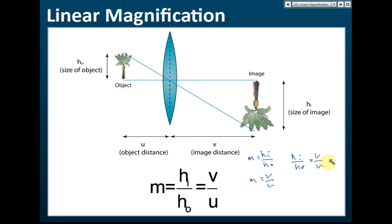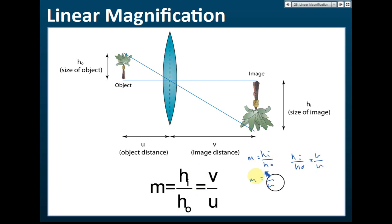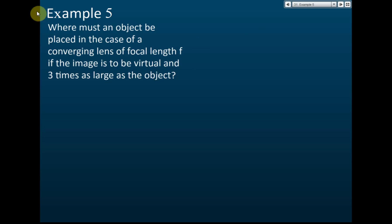You can use m equals hi over ho to find linear magnification, or m equals v over u, or hi over ho equals v over u to find the height of the image, the size of the image, v, u, or ho. Sometimes students get confused when these three are combined, so you can write it any of these three ways to solve the problem.